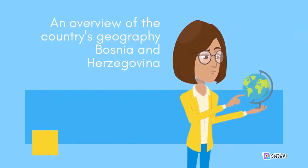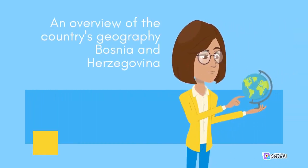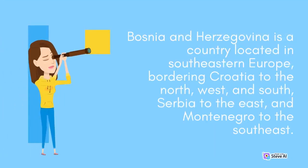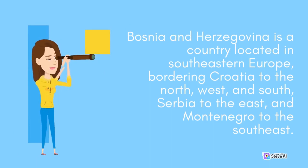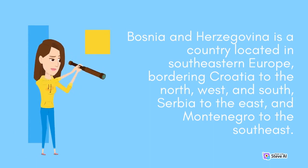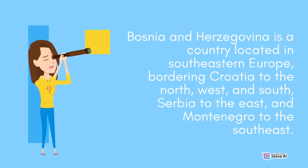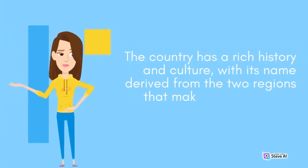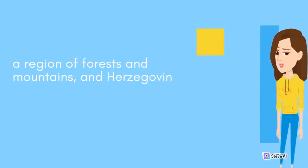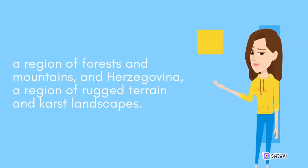Bosnia and Herzegovina is a country located in southeastern Europe, bordering Croatia to the north, west, and south, Serbia to the east, and Montenegro to the southeast. The country has a rich history and culture, with its name derived from the two regions that make up the country: Bosnia, a region of forests and mountains, and Herzegovina, a region of rugged terrain and karst landscapes.